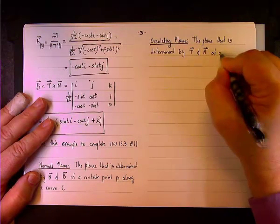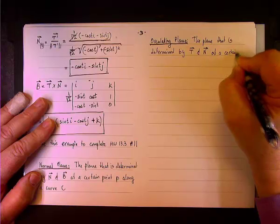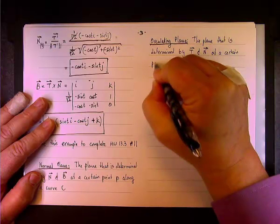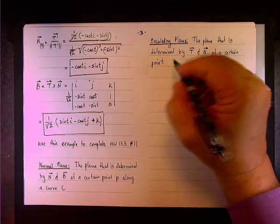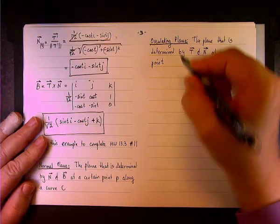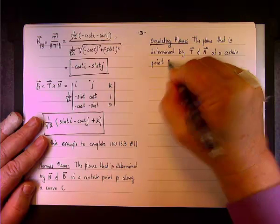So those are the two vectors. And again, at a certain point P, on the curve, along the curve C.